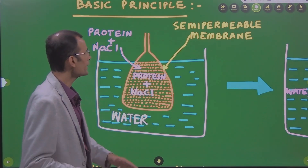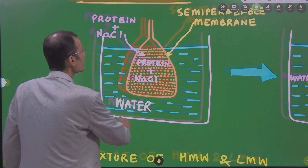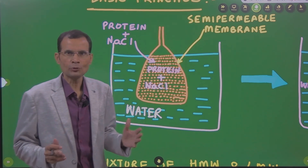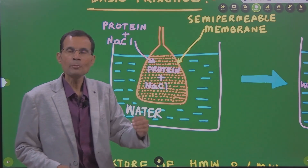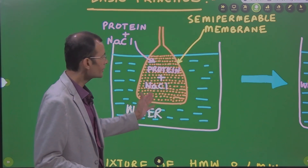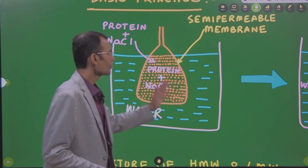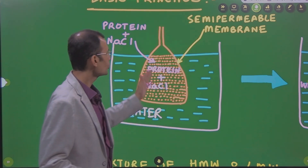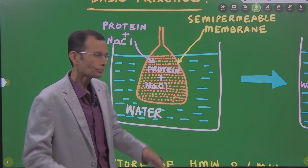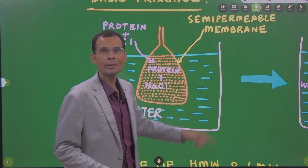These two solutions are separated by a semi-permeable membrane. What happens is that the low molecular weight substances in this bag — like sodium chloride, the low molecular weight — will pass through the semi-permeable membrane and will come out. But protein, being the high molecular weight substance, could not come out.